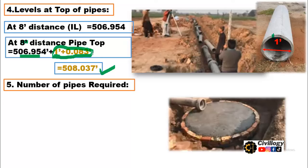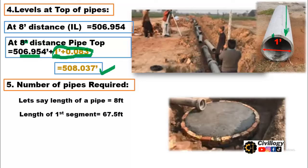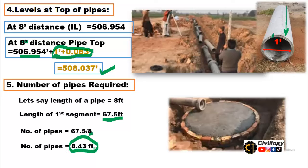To calculate the number of pipes required: if the standard length of a single pipe is 8 feet and the distance to be covered is 67.5 feet, simply divide 67.5 by 8. You get 8.43, meaning approximately 8.5 pipes. The remaining length can be adjusted within the manhole — it can be made shorter or longer to fit between segments. These are the basic steps by which you can find invert levels and levels at any distances along your pipeline.